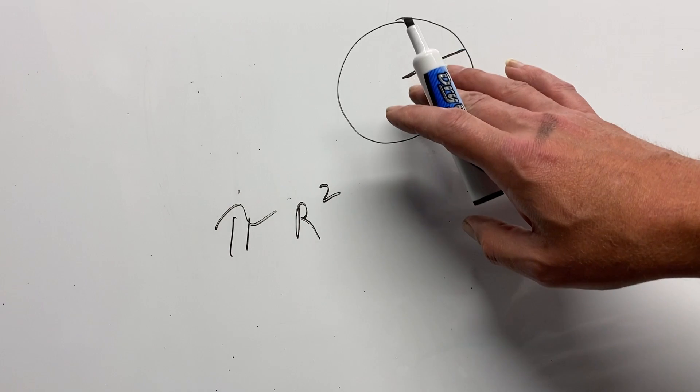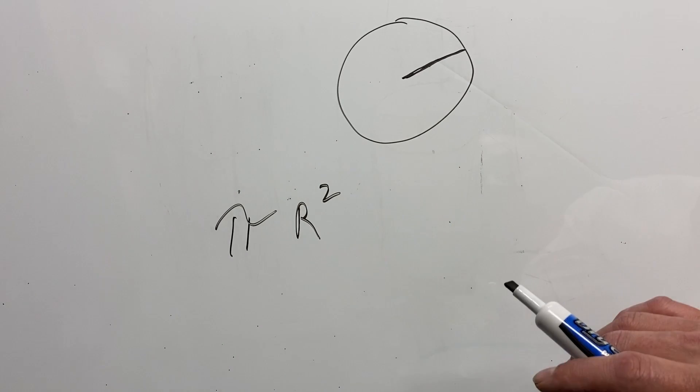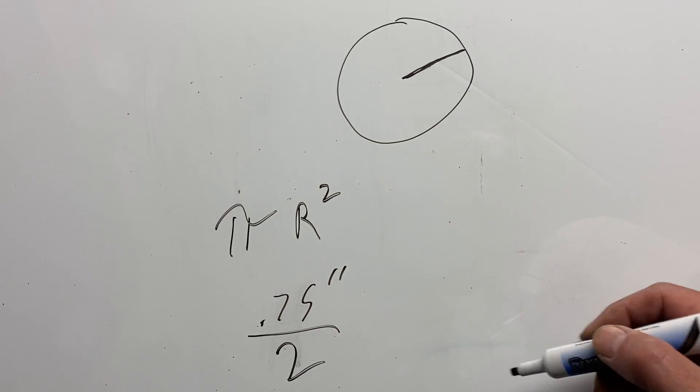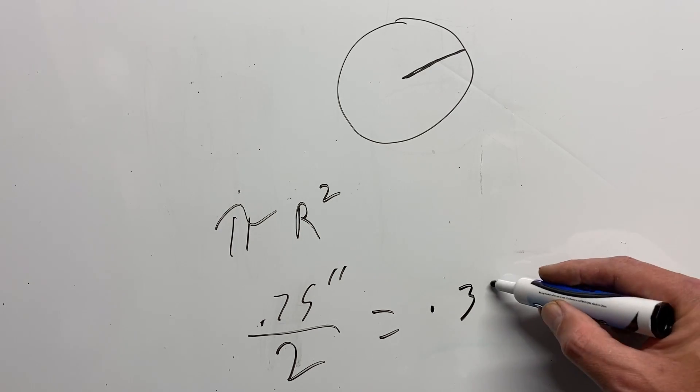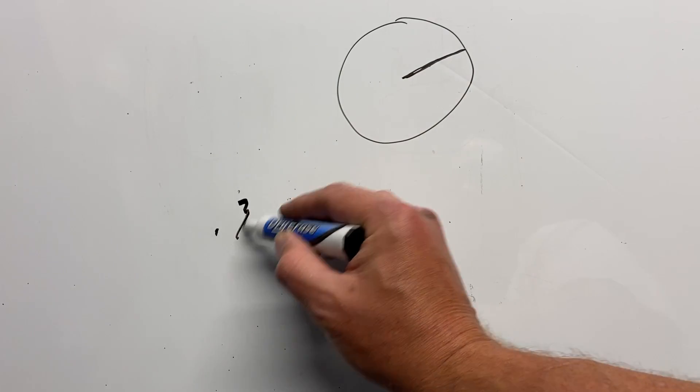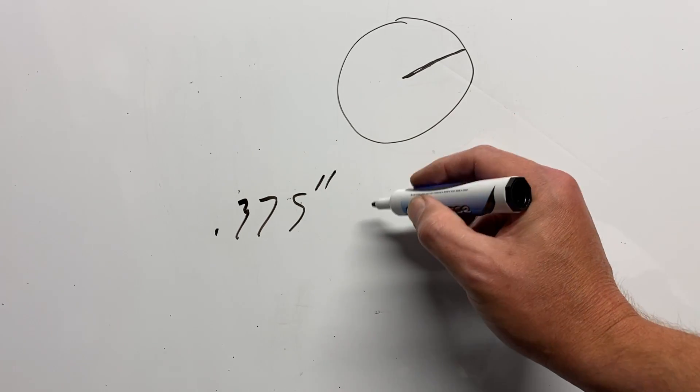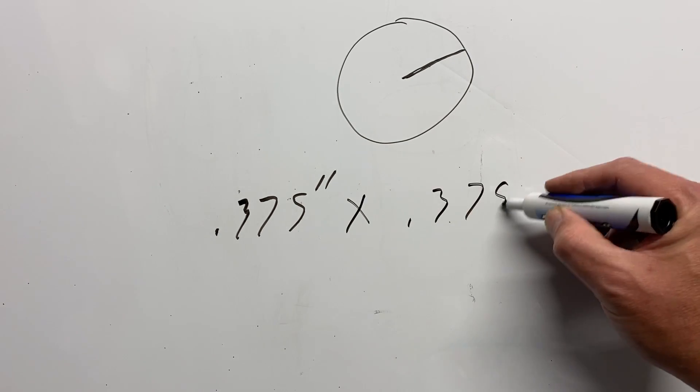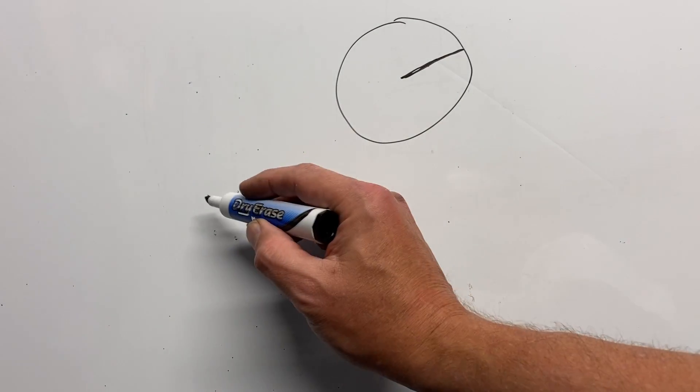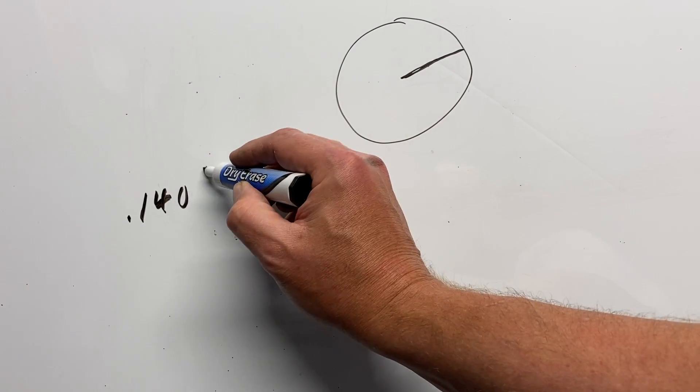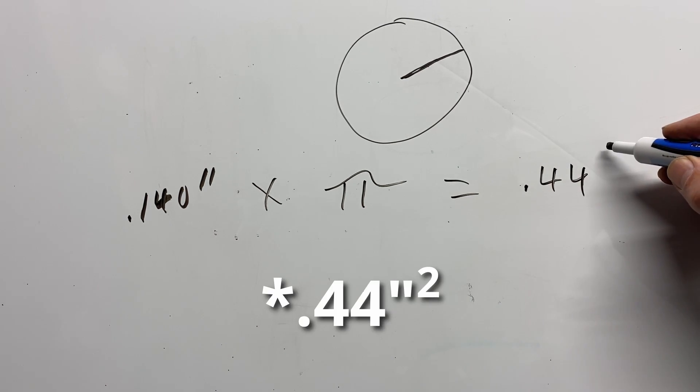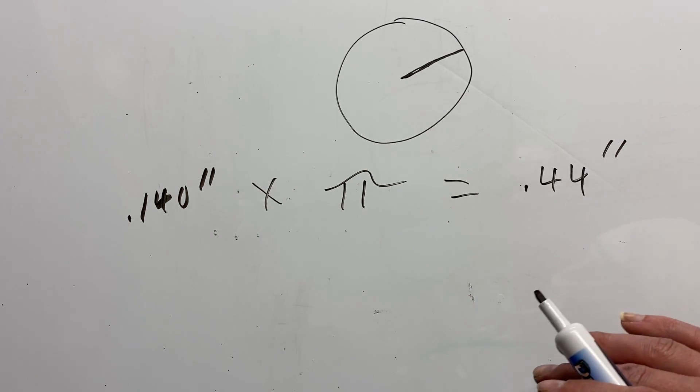So in the case of a 3 quarter inch master cylinder, we have 0.75 inches. Half of that is going to be, divide that by 2, equals 0.375 inches. So that is going to be our radius. Now we take 0.375 inches, times 0.375 inches, and that equals 0.140 inches. So now we take the 0.140 inches, times pi, and that equals 0.44 inches.